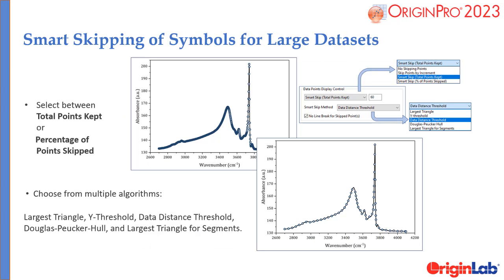New methods have been added to skip symbols when plotting large datasets as symbol or line symbol plots. This allows for a cleaner graph while maintaining overall features of the data. All analysis operations on a graph will take the entire dataset into account. A control is available in the drop lines tab of the plot details dialog.